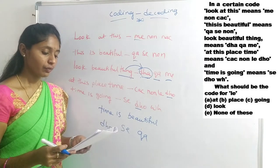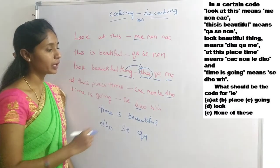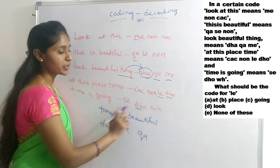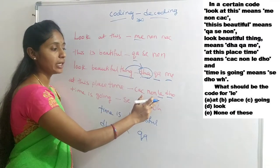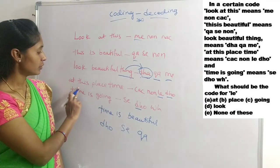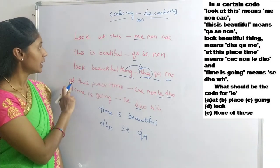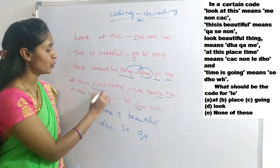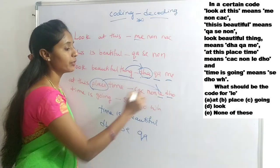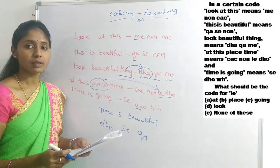Next question: What should be the code for 'LE'? In all codes, LE appears only in one place. The word 'place' is not repeated in the entire code while other words are repeated. So LE is coded for 'place' — option B is the right answer.